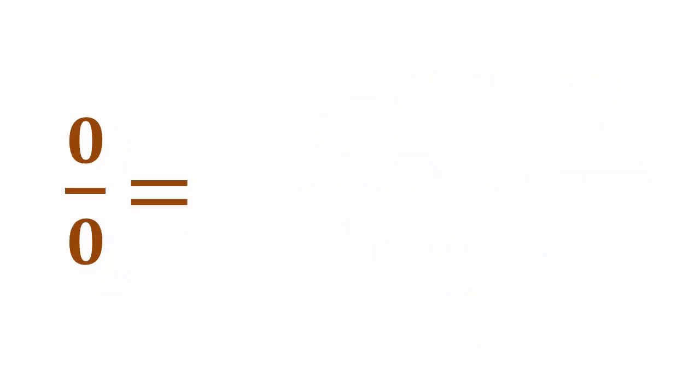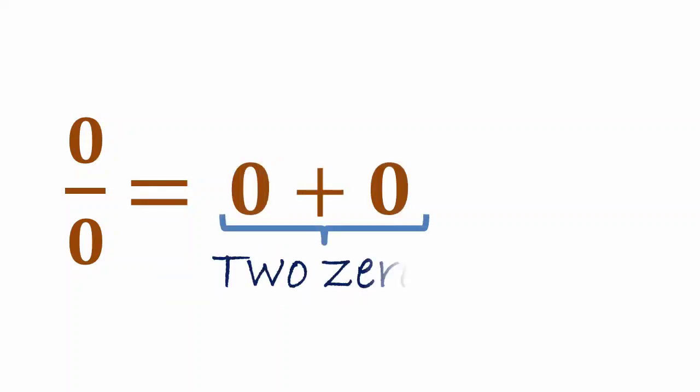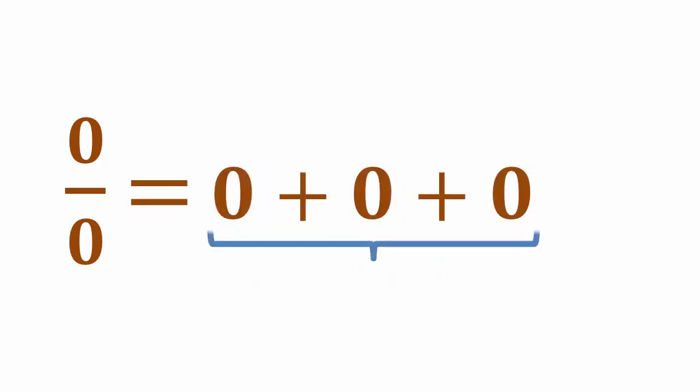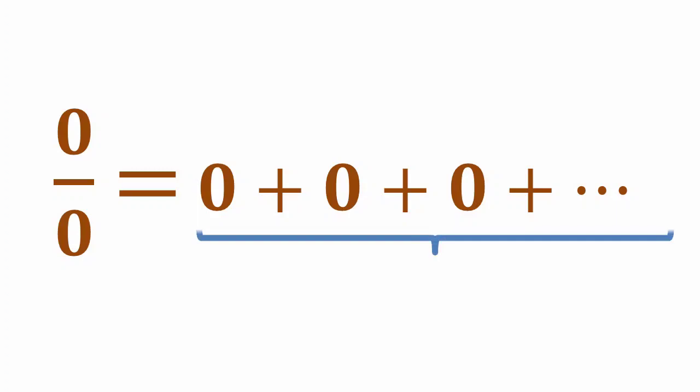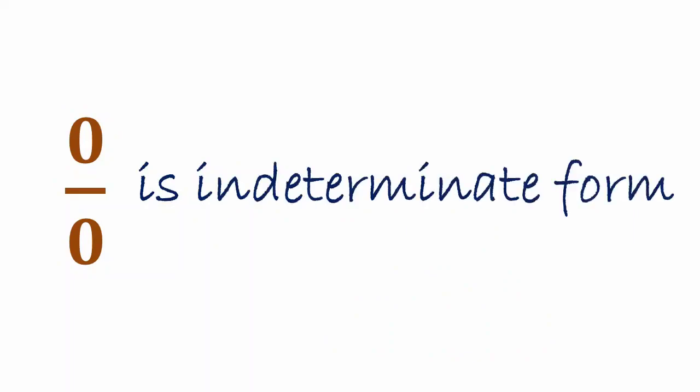The answer may be 1 because 1 0 is equal to 0, but the answer may be 2 because 0 plus 0 is equal to 0. The answer may be 3, may be 4 and so on, or it can be infinite number of 0's. So we cannot determine how many 0's can make a 0. That's why 0 by 0 is indeterminate form.